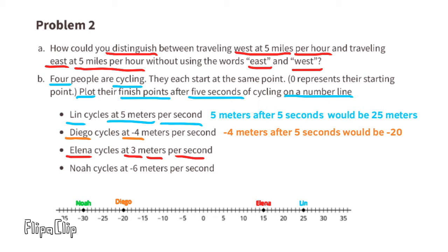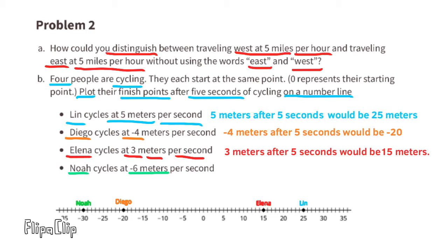Elena cycles at three meters per second — positive, so to the right of zero. Three meters times five equals 15, so Elena is plotted at positive 15. Noah cycles at negative six meters per second — six meters to the west per second. Negative six times five equals negative 30, so Noah is plotted at negative 30, to the left of zero.